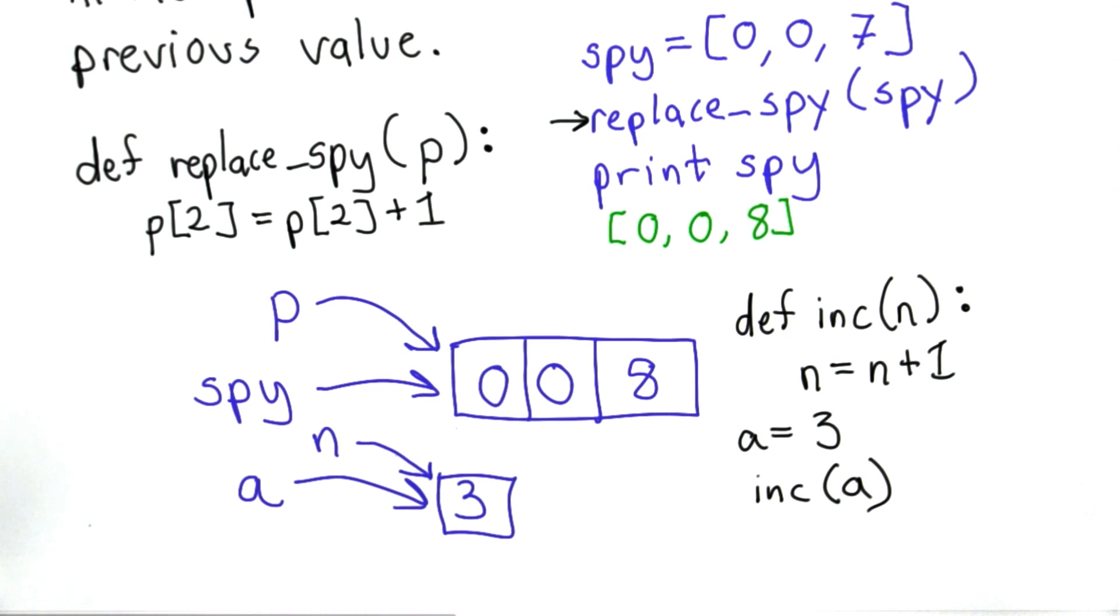But we can't mutate that value. What happens inside inc is an assignment statement. We assign to n the value n plus 1. So that changes the value n refers to. Now n refers to the value 4.